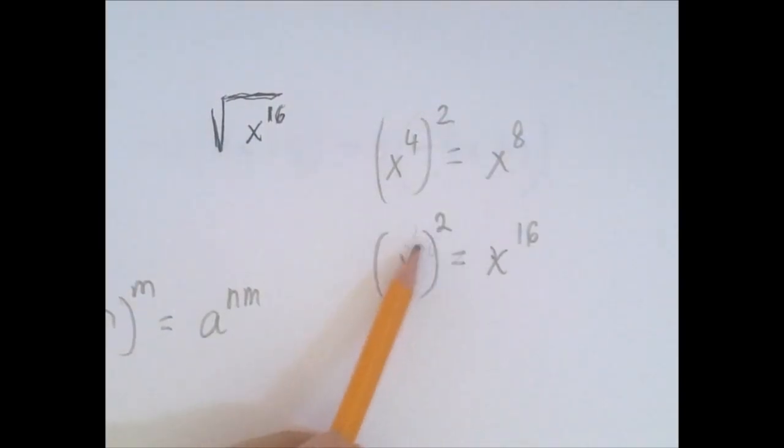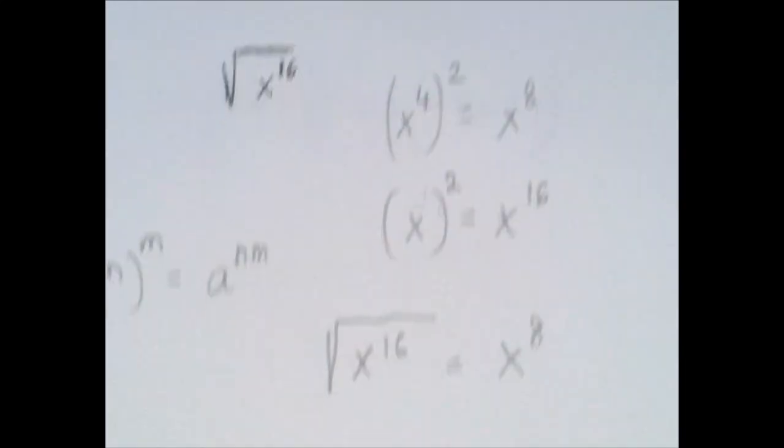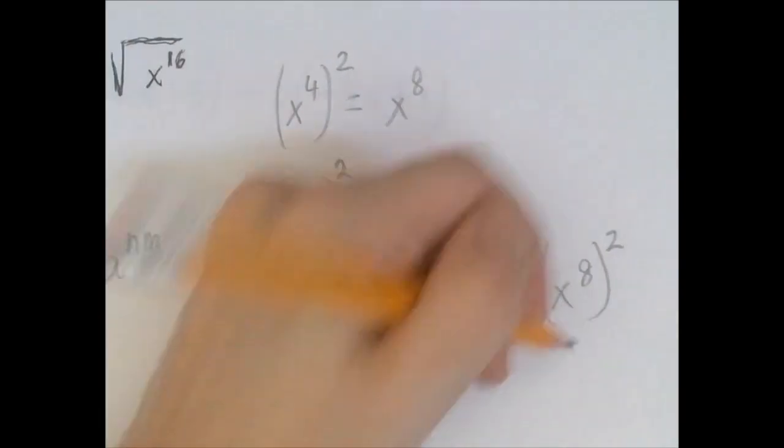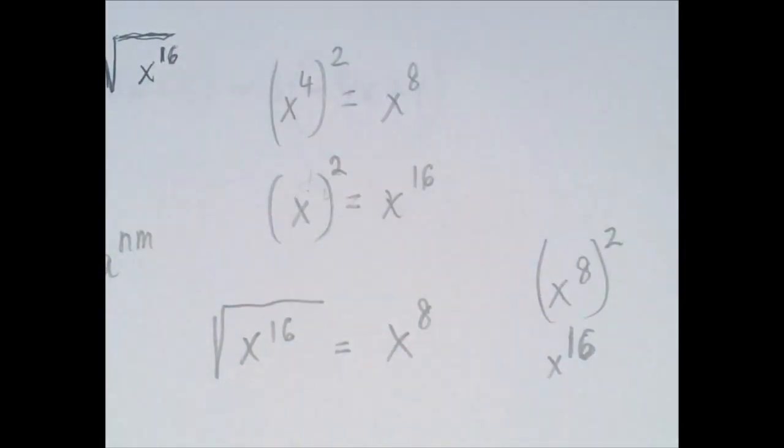So what do we multiply by 2 to get to 16? The answer is 8. So square root of x to the 16th should be x to the 8th. Let's check. If we square x to the 8th, we do get x to the 16th. So it looks like our answer is correct.